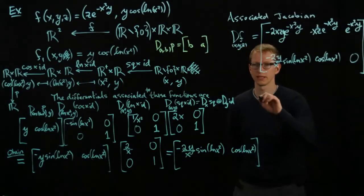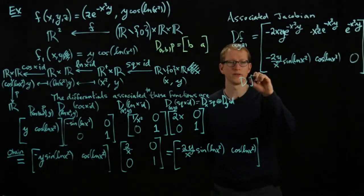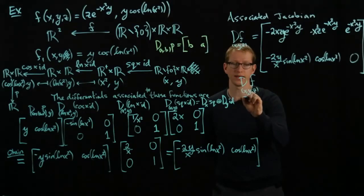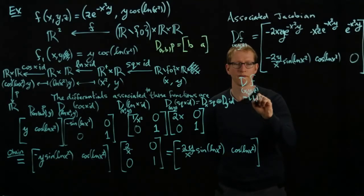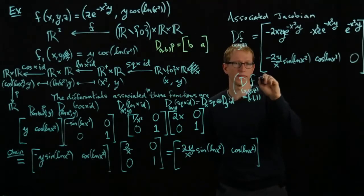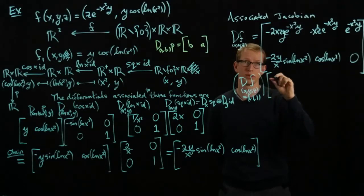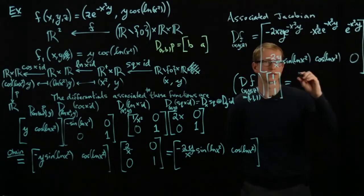For an example, we can calculate the derivative of f at the point (1, 1, 1) applied to the vector (1, −1, 1). We evaluate this Jacobian at x=1, y=1, z=1, and then apply it to the vector (1, −1, 1).